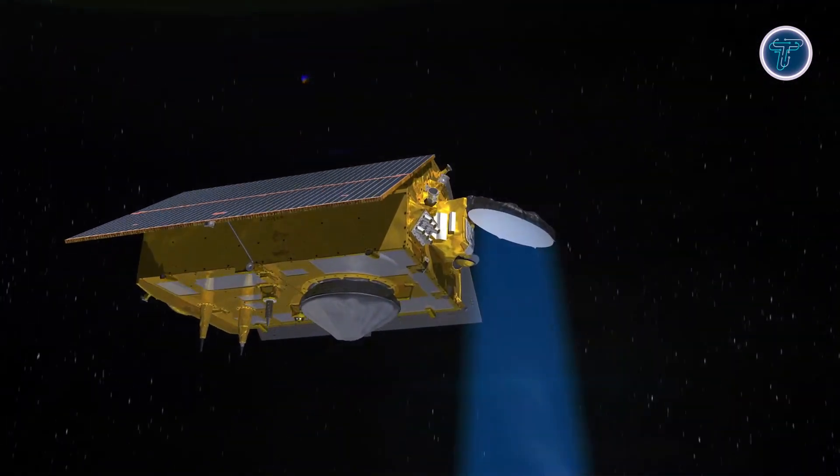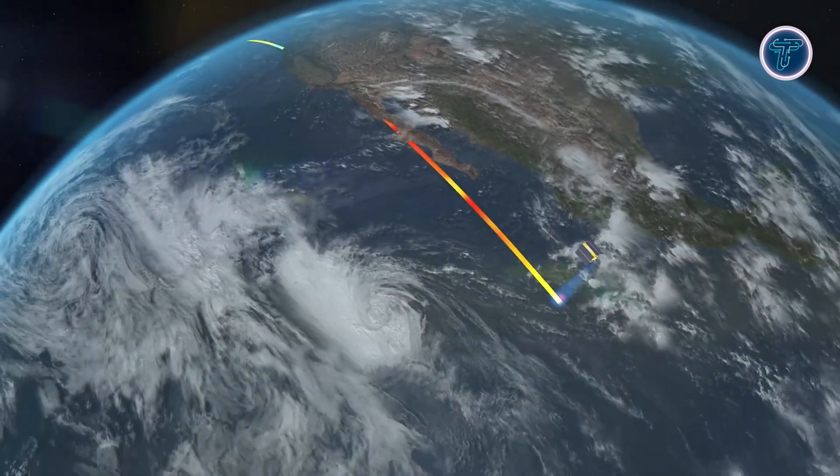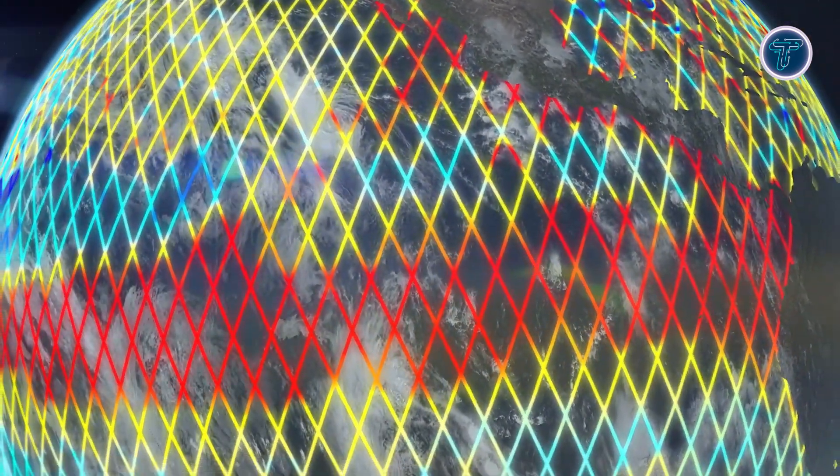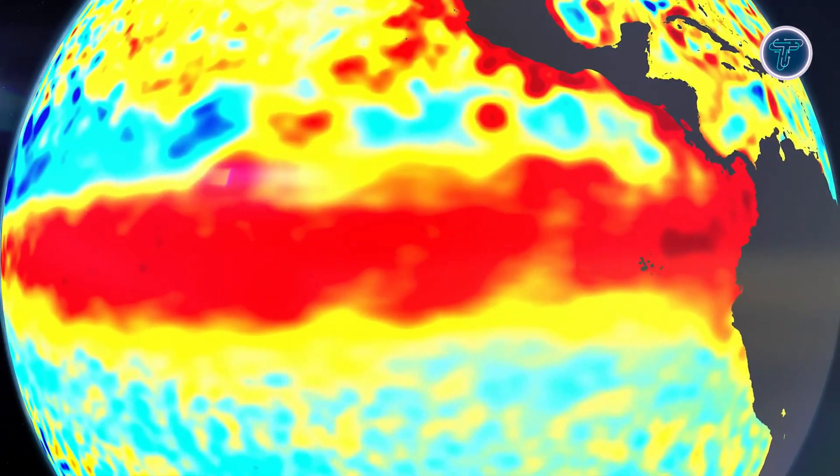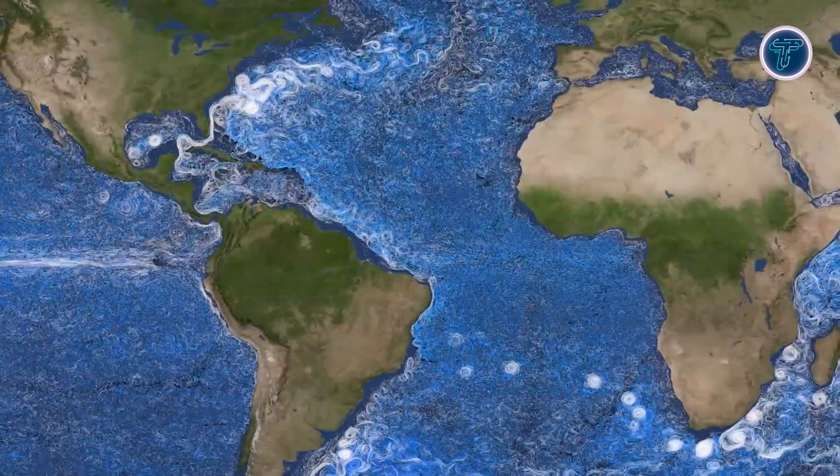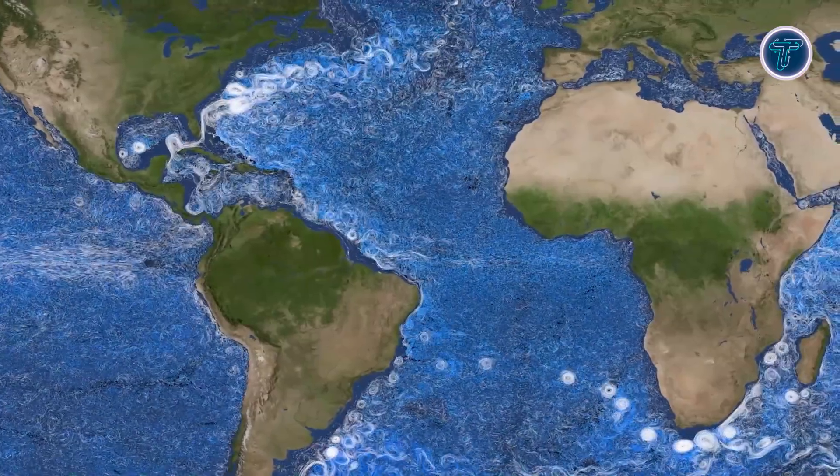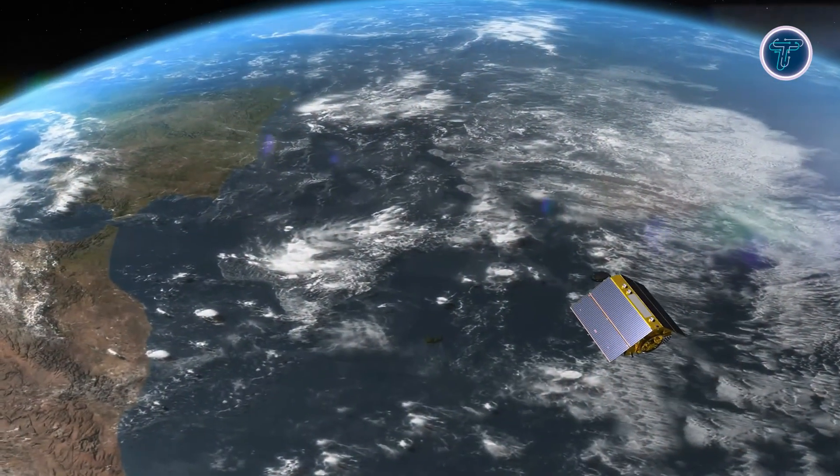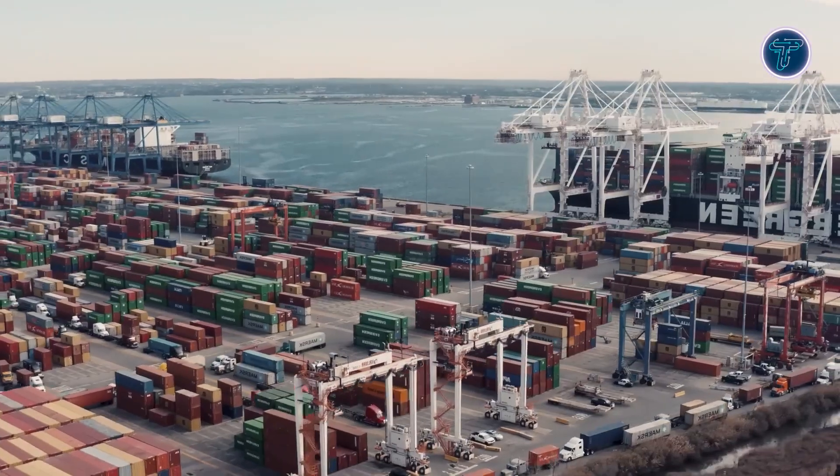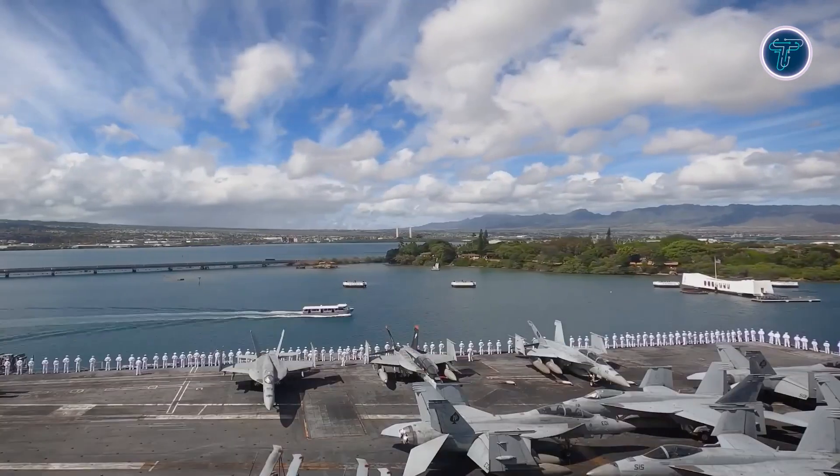Sentinel-6b's measurements also support more accurate weather forecasts and provide insights that can help communities prepare for storms, floods, and shifting climate patterns. By orbiting the planet with a consistent 10-day repeat cycle, the satellite creates a continuous global map of ocean behavior. Sentinel-6b stands as a powerful example of how space technology is transforming our ability to monitor and protect Earth's rapidly changing environment.